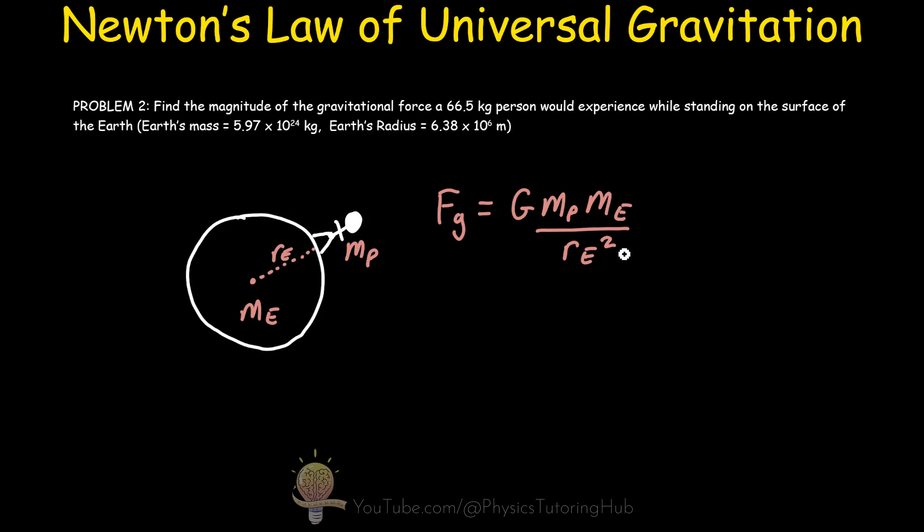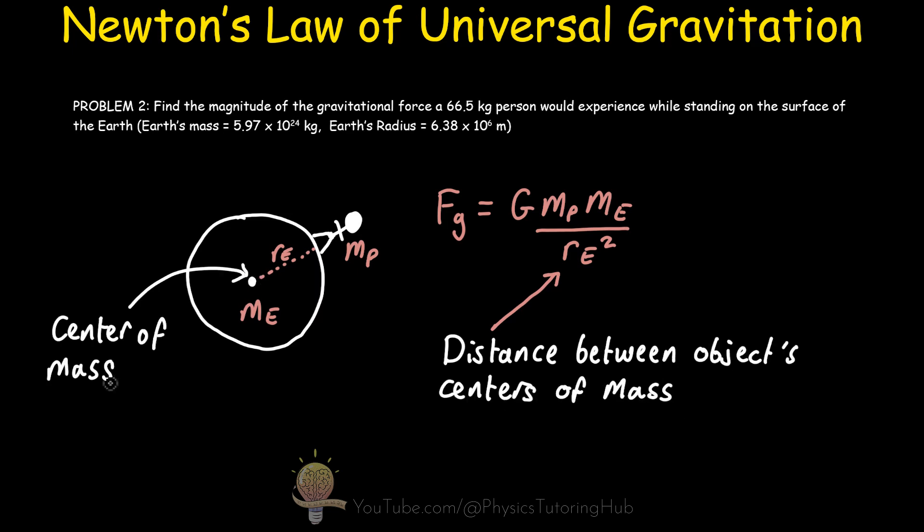Remember, the distance in this equation is the distance between the object's centers of mass. And because the earth can be simplified to a sphere, its center of mass is right at the center of the planet. So the distance between the person and the earth is equal to the radius of the earth.